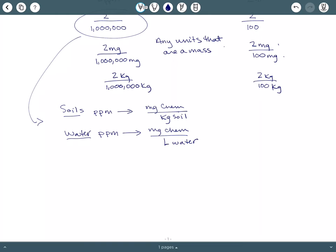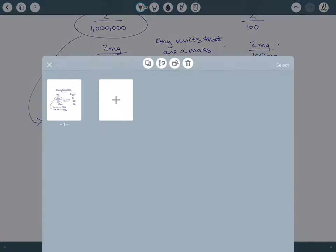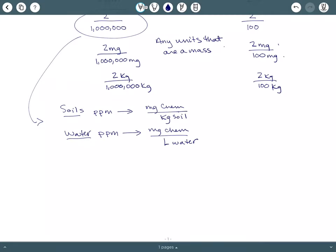In soils, let's say we're still going to work with two ppm, two parts per million. We'll start with two milligrams. We know that two parts per million is two milligrams for one million milligrams of soil.